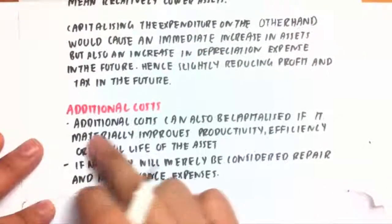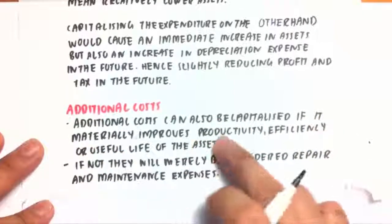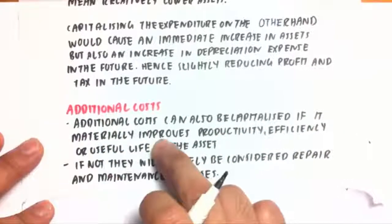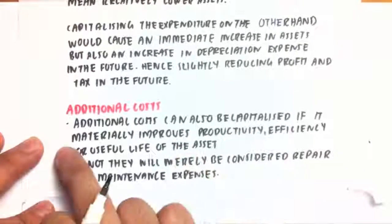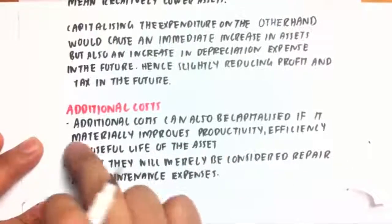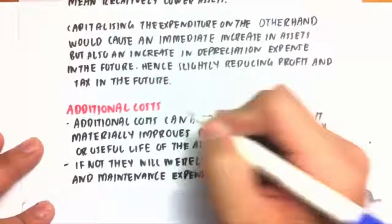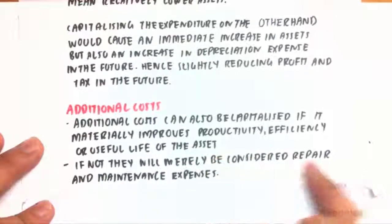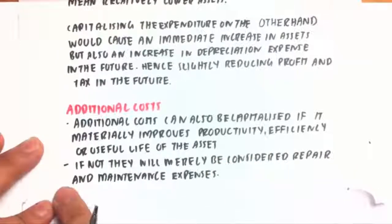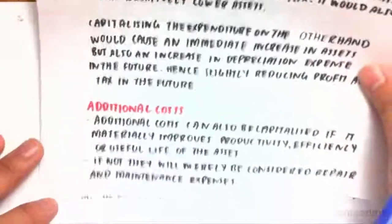Additional costs can also be capitalized, but only if they materially improve the productivity, efficiency, or useful life of the asset. It must be a material improvement — obvious and significant. If it isn't, it will merely be considered a repair or maintenance expense and cannot be capitalized.